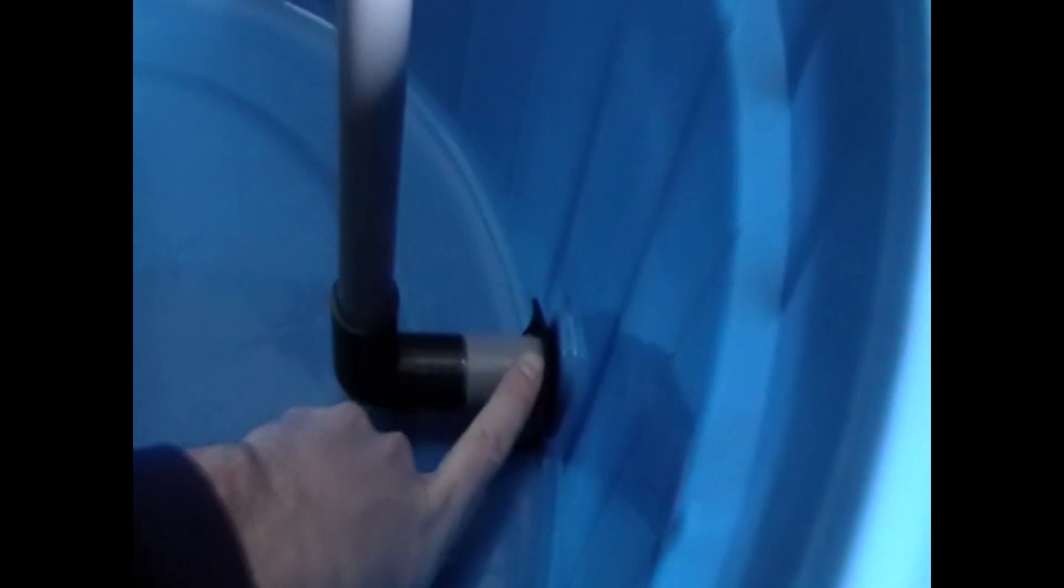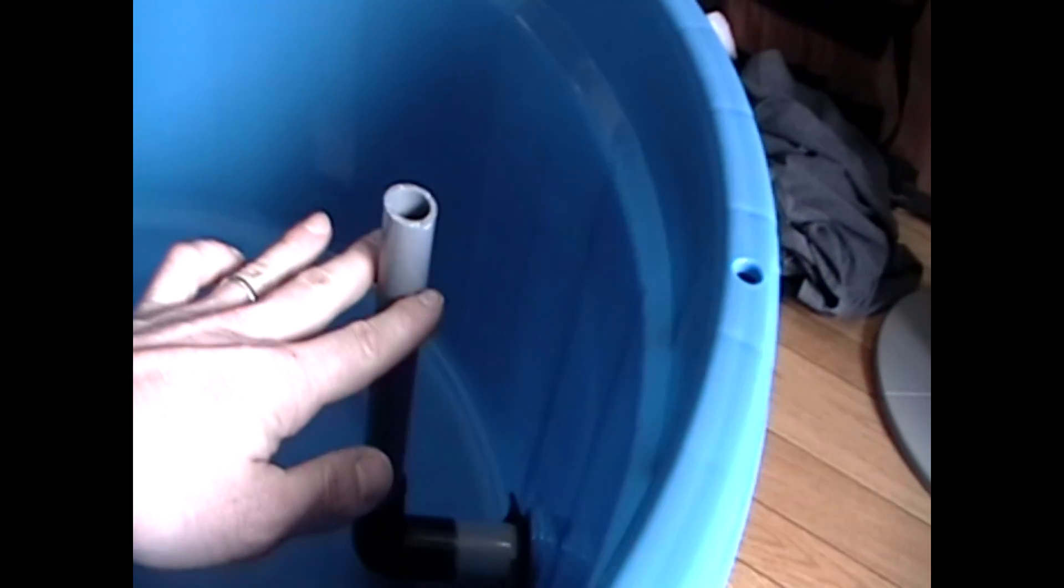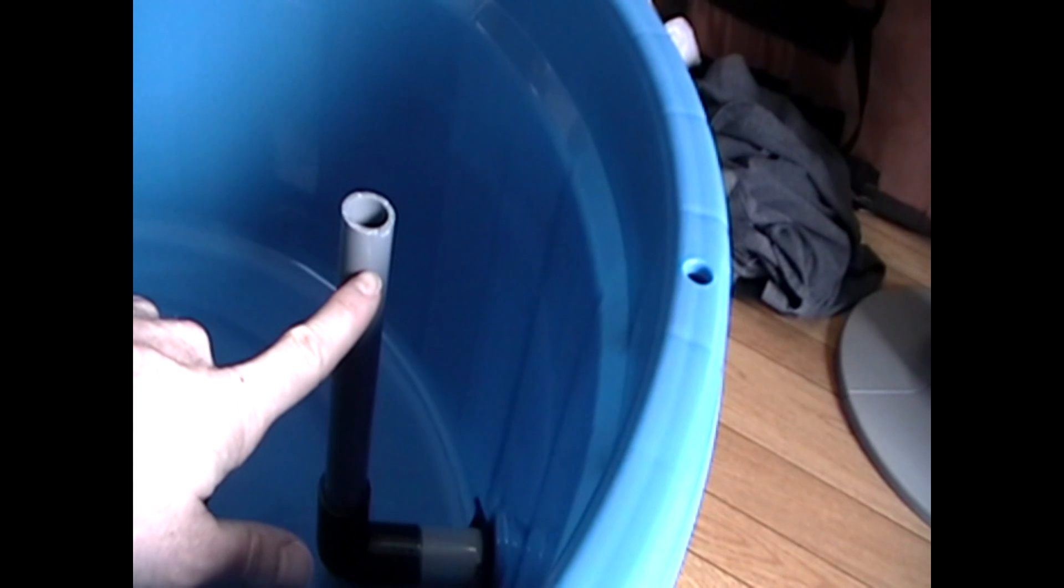I don't really have any leakage there in my experiments so far. Then I got an elbow bend and then the pipe coming up here. So the water level will fill up in the grow bed and once it gets to here, the auto siphon will start.